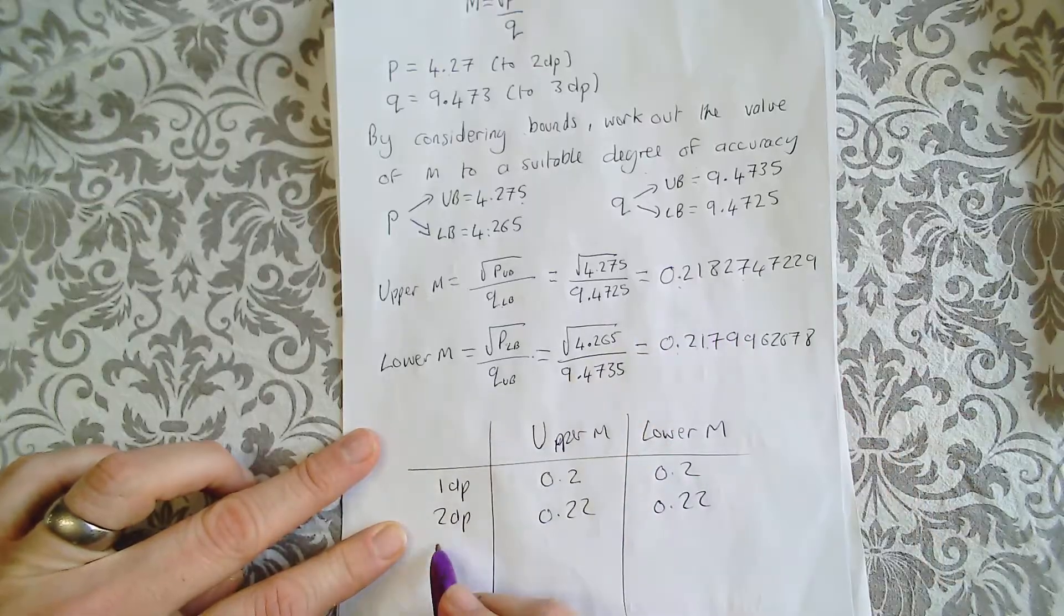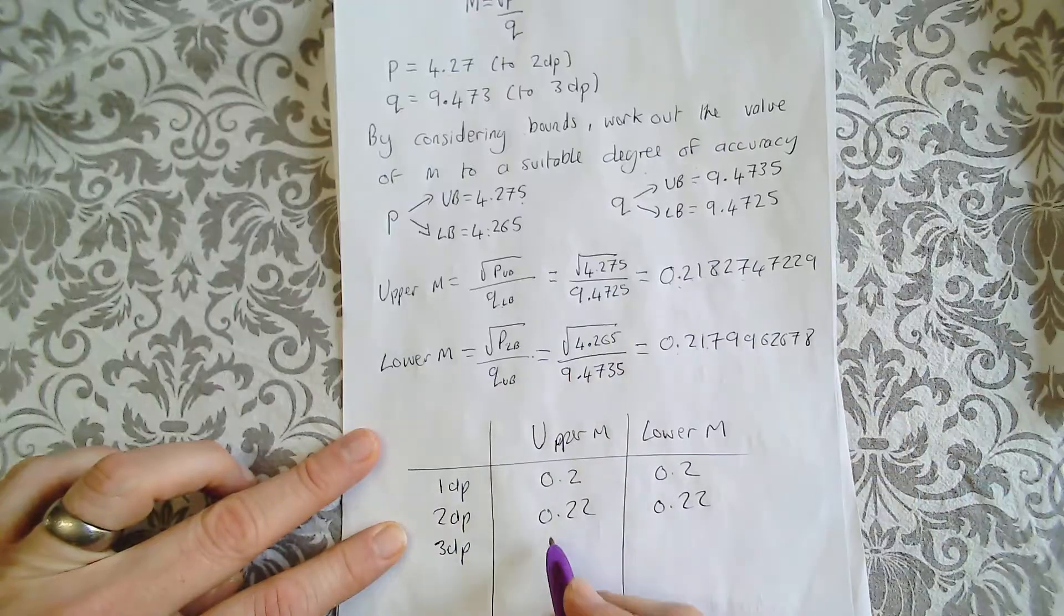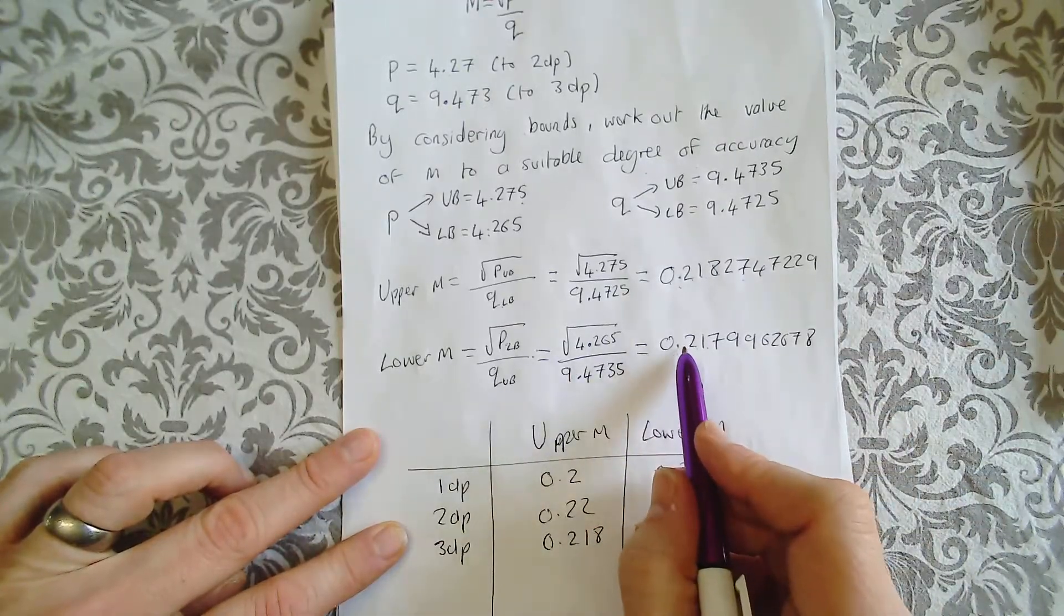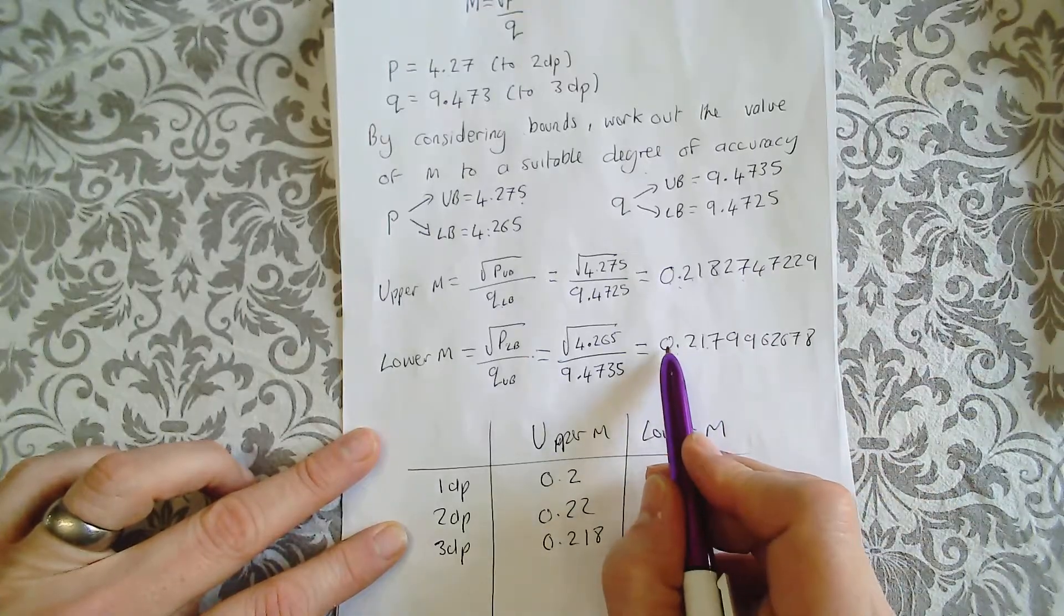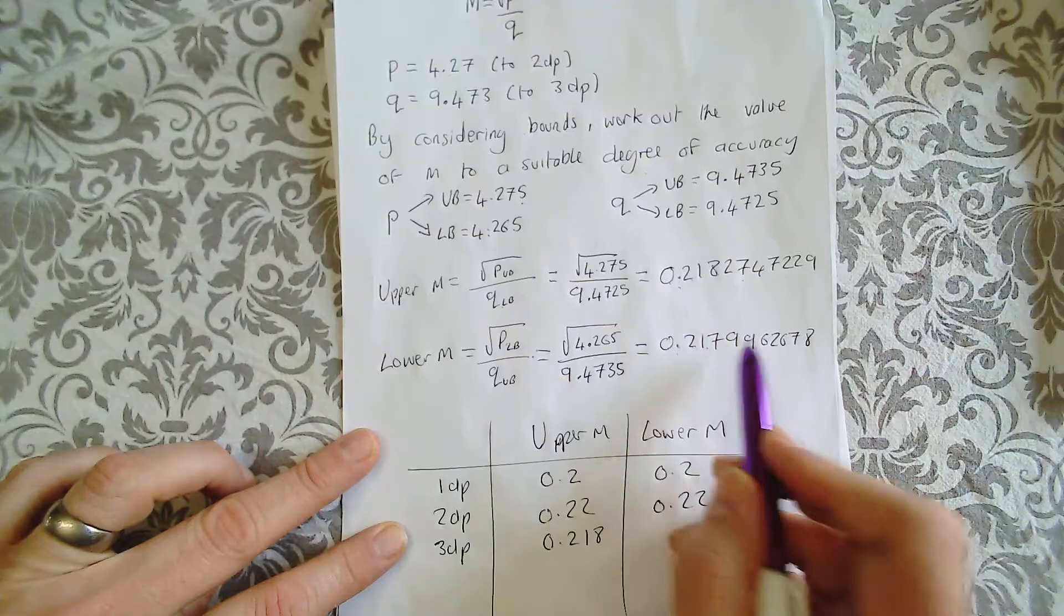Now let's round them to three decimal places. That would be 0.218. To three decimal places, this would be 0.218. That rounds up because that's a 9.